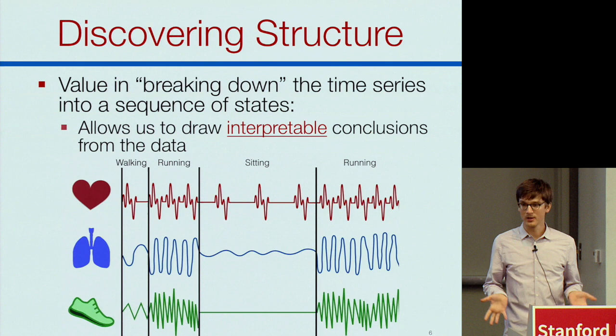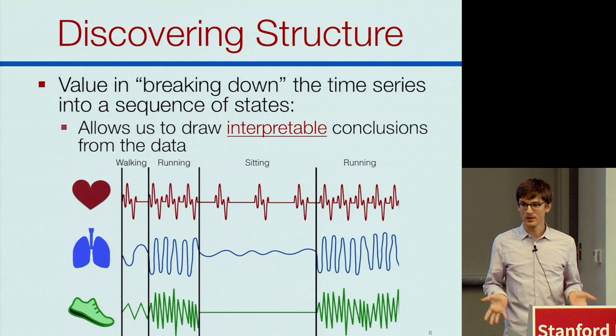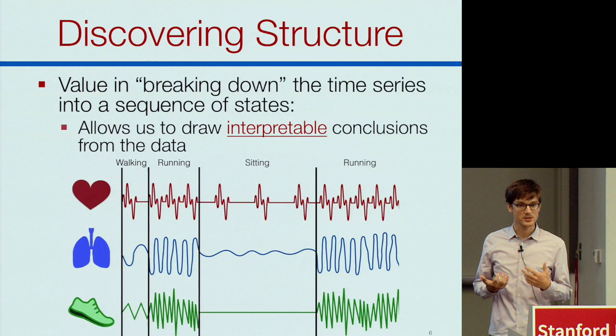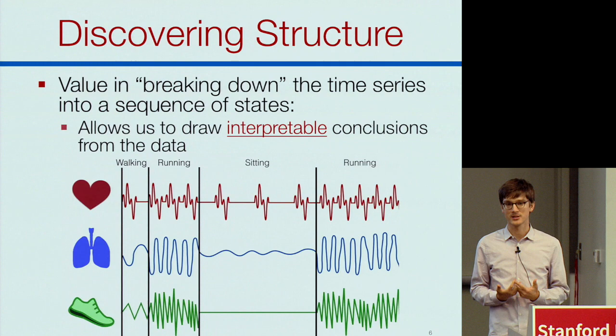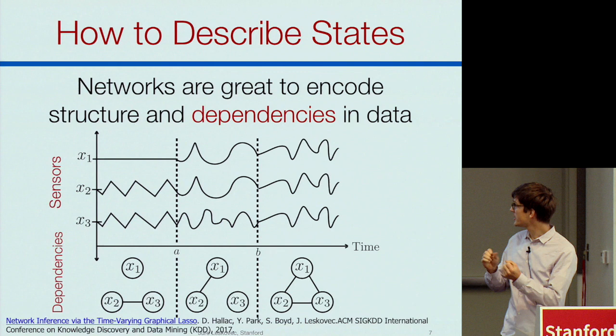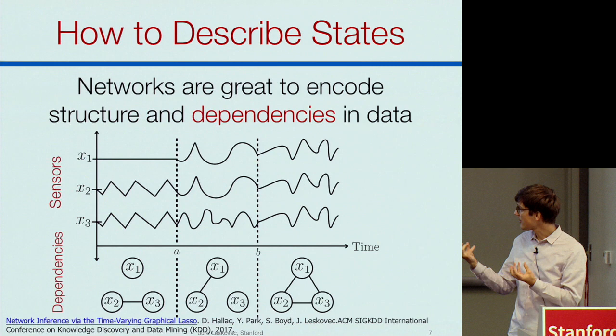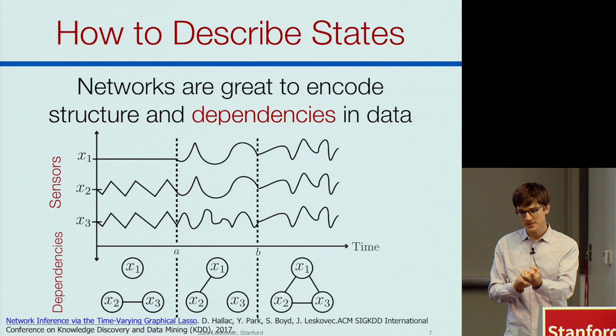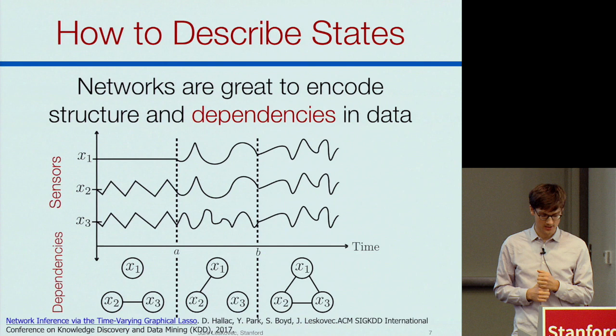The idea is: given hordes of unlabeled, unstructured sensor network data, can I discover these types of insights? I want to do two things — discover the states and describe each of them. The way we describe states is to identify dependency networks: take this big time series, segment it into states, and for every state learn the dependency network between sensor readings, capturing how things are correlated or dependent throughout the time series.